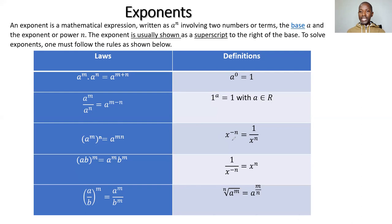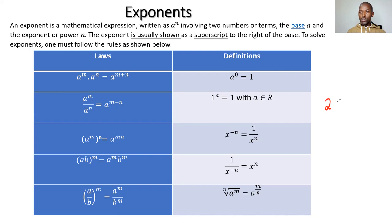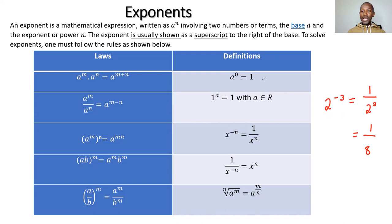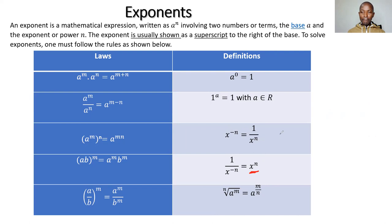The next definition: 'x to the power of negative n' can be written as '1 over x to the power n'. The negative power becomes positive when you write it as a reciprocal. For example, 2 to the power negative 3 is 1 over 2 to the power 3, which is 1 over 8. Conversely, '1 over x to the power negative n' equals 'x to the power n'.